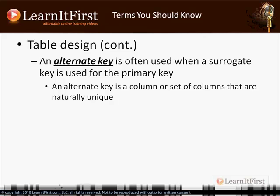If one in five million have duplicate social security numbers, what's the likelihood that two people with the same social security number also have the same first name, last name, and birth date? That probably goes down to one in one billion or one in five hundred million. But now you need four columns to uniquely identify one particular patient — you'd have to say SELECT from the table WHERE social security number equals this AND first name equals that AND last name equals this AND birth date equals that for every patient you query.